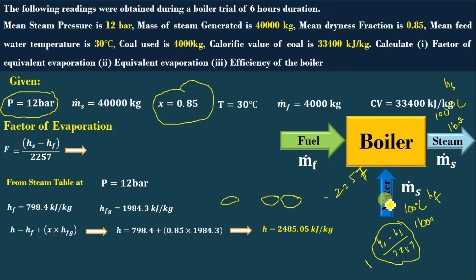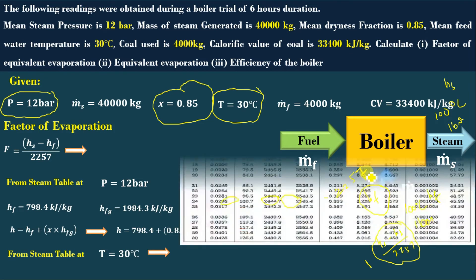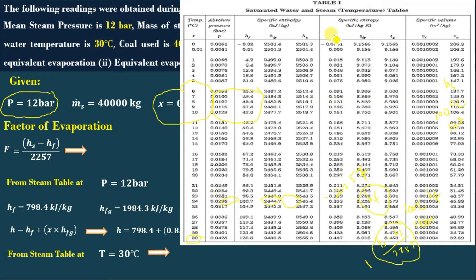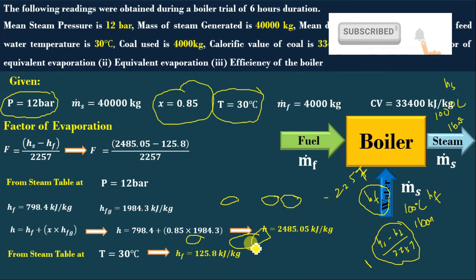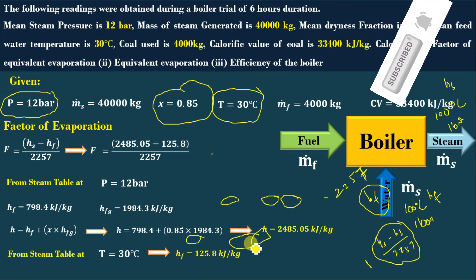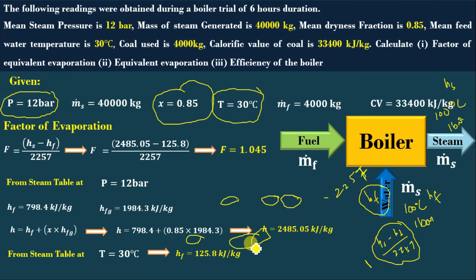Similarly, we need to find out the inlet enthalpy of the boiler feed water. We always take saturated liquid. The feed water temperature given is 30°C. From the steam table for 30°C, Hf = 125.8 kJ/kg. Now substituting in the factor of evaporation formula: F = (2485.05 − 125.8) / 2257 = 1.045. So it is 0.045 times greater than the actual evaporation.